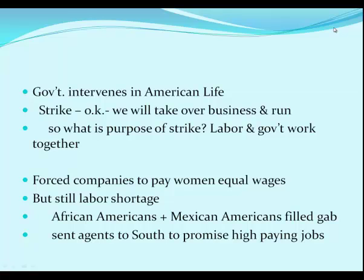The government was heavily involved in American life. When unions wanted to go on strike, they were told that if they walked out the front door, the military would walk in the back door and take over — so why strike if you can't shut anything down? Labor got the message and began to work with the government. The government forced companies to pay women equal wages for equal jobs. There was still a big labor shortage, so people were recruited from the South — African Americans were brought to defense plant areas to work, the quota for Mexican Americans coming in was raised, and many women took over men's jobs.